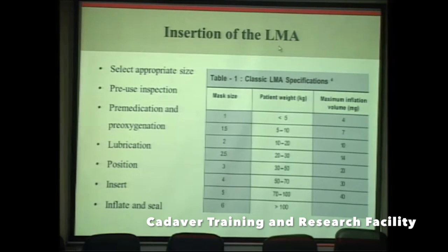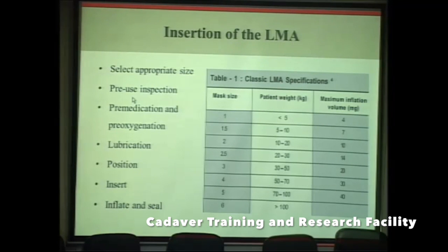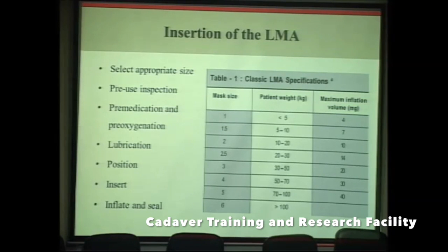For insertion of the LMA, first select the appropriate size and device for the patient. Pre-use inspection is very important — check for any cuff leaks, kinking of the wire, and patency of the airway tube. Then deflate the LMA device, lubricate it, position the patient, insert it correctly, then inflate and check for any leaks.